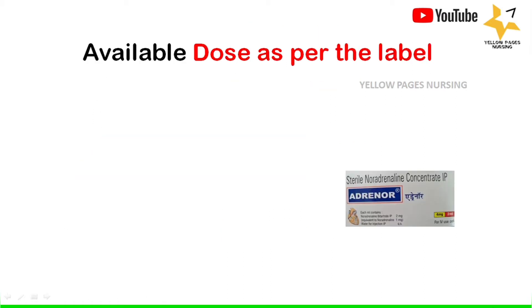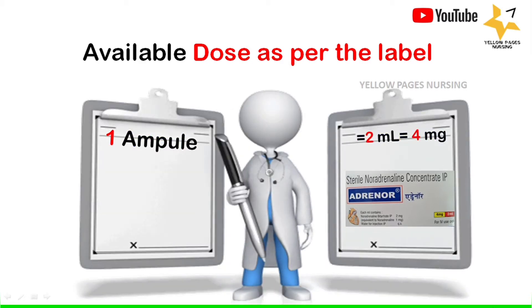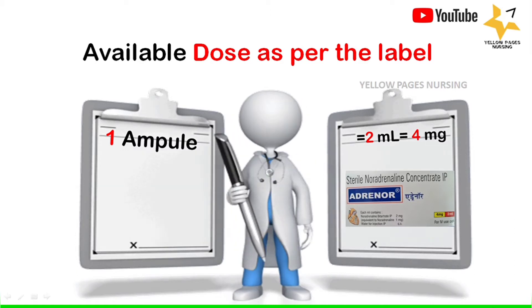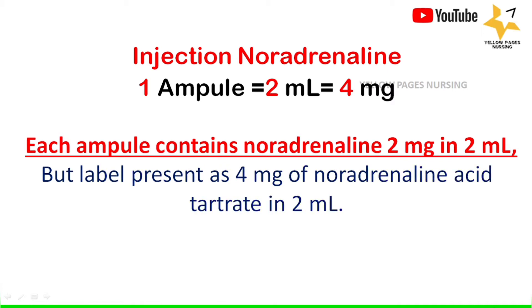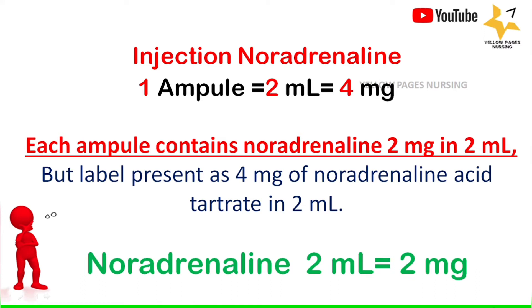Noradrenaline comes in ampoule form. As per the label, one ampoule contains 2 ml which equals 4 mg. However, each ampoule contains noradrenaline 2 mg in 2 ml — the label presents as 4 mg of noradrenaline acid tartrate in 2 ml. The exact amount of noradrenaline in a 2 ml ampoule is 2 mg.